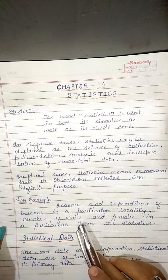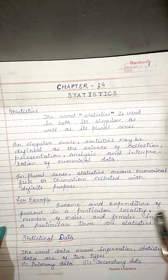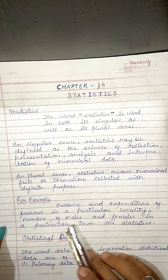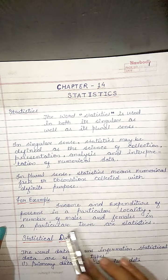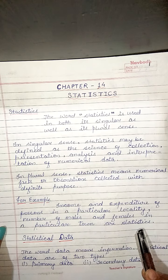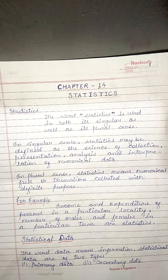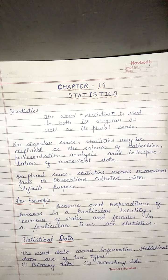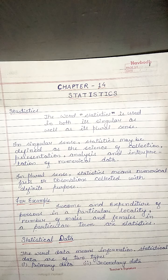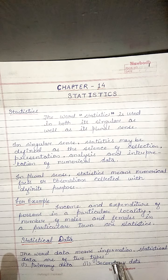For example, income and expenditure of a person in a particular locality, number of males and females in a particular town are statistics. Some more examples are in the form of collection of data. The word data means information.